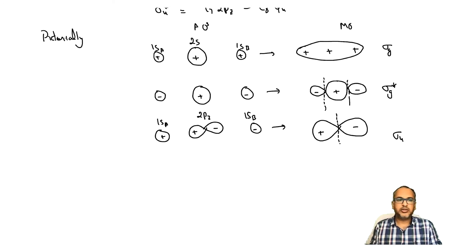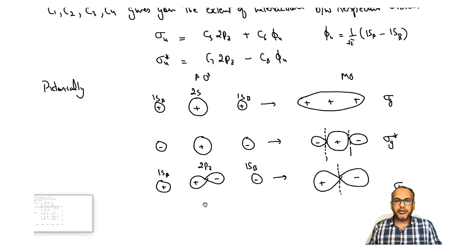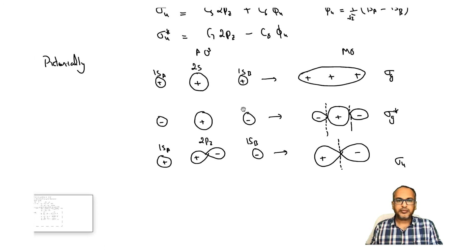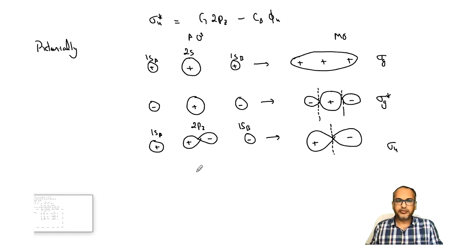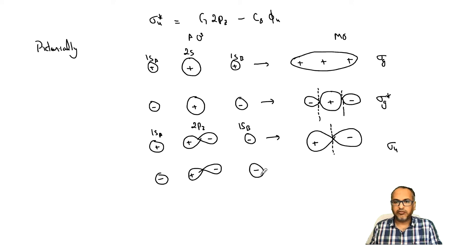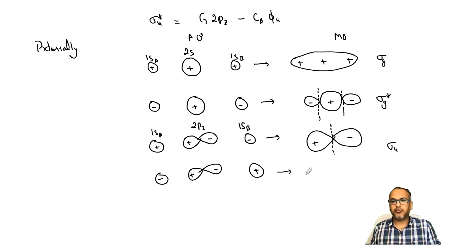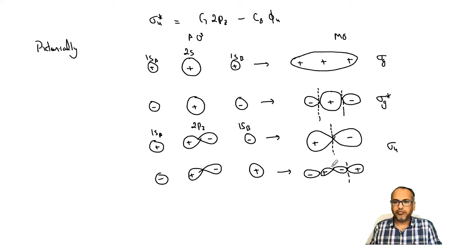For σu*, 2pz remains the same but φu enters with a negative sign, so the hydrogen orbital phases are reversed. Now the negative phase of the hydrogen opposes the positive lobe of 2pz, and vice versa, creating additional nodes. The result has four lobes with alternating plus-minus-plus-minus-plus phases and three nodes total — this is the anti-bonding σu* orbital.